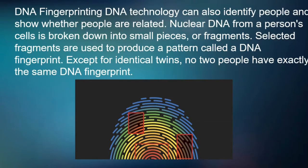DNA Fingerprinting. DNA technology can also identify people and show whether people are related. Nuclear DNA from a person's cells is broken down into small pieces or fragments. Selected fragments are used to produce a pattern called a DNA fingerprint. Except for identical twins, no two people have exactly the same DNA fingerprint.